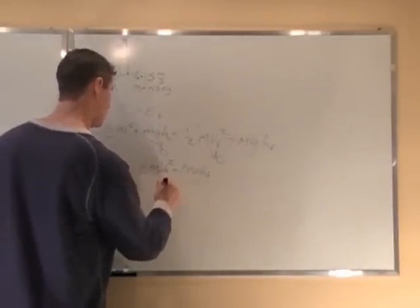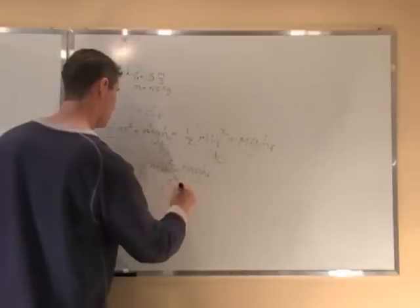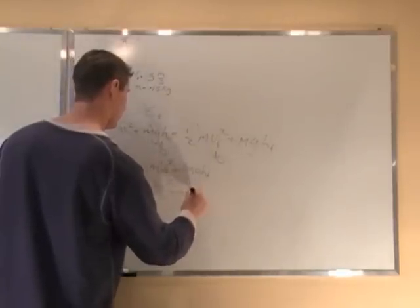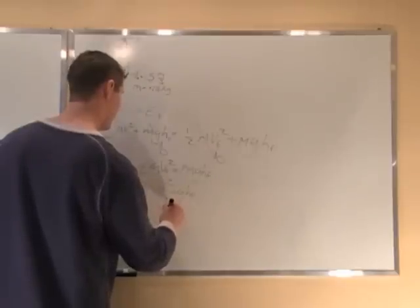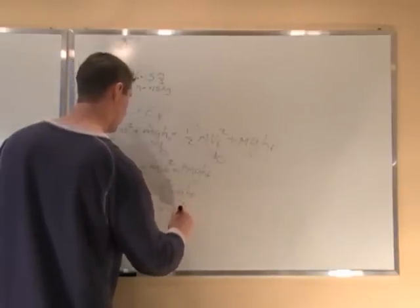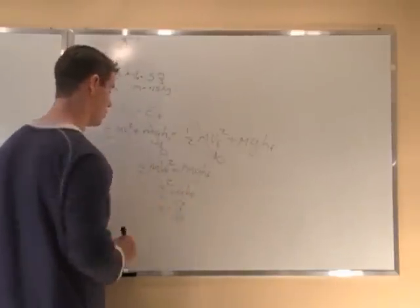So we have v-naught squared over 2 equals g times final height. Final height is equal to v-naught squared over 2g when I divide the g over.